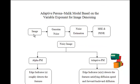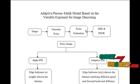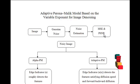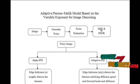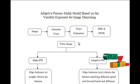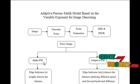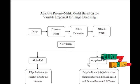Consider a still image, apply Gaussian noise to it, and estimate its parameters. Calculate the MSE and PSNR quality metrics — MSE stands for mean squared error and PSNR for peak signal-to-noise ratio. This noisy image is then subjected to two different types of denoising: alpha PM and adaptive PM.